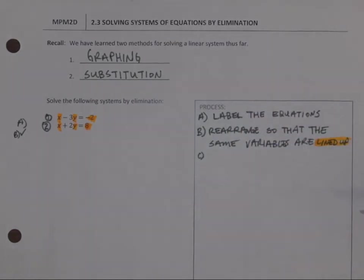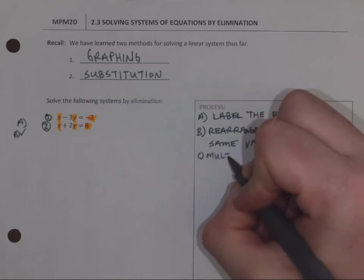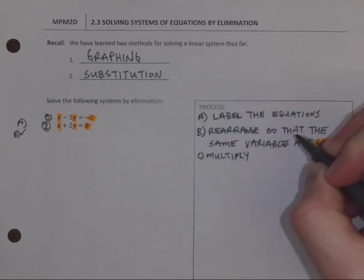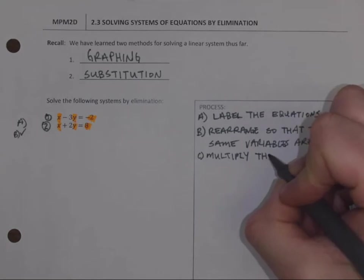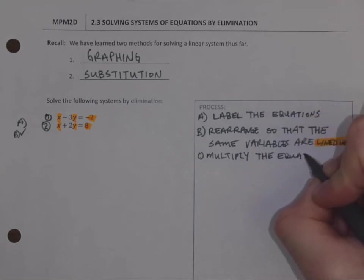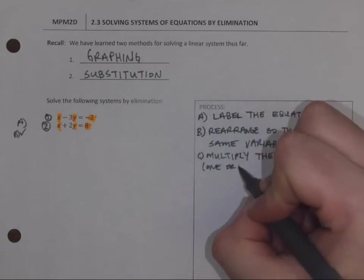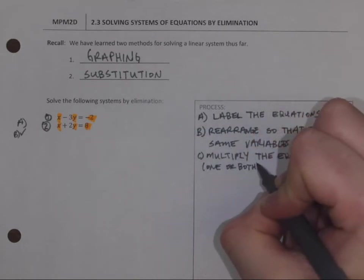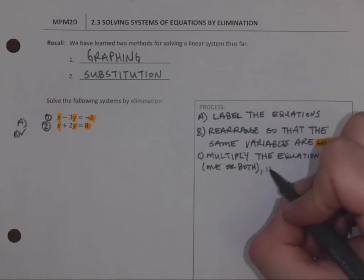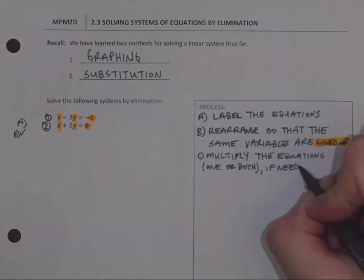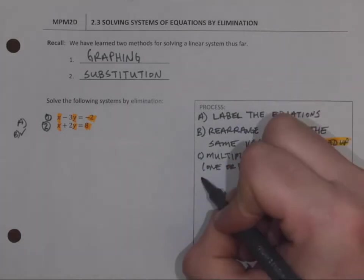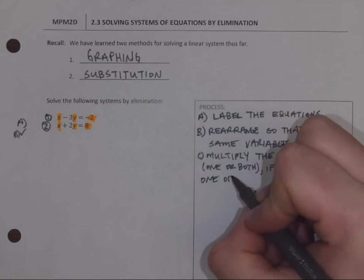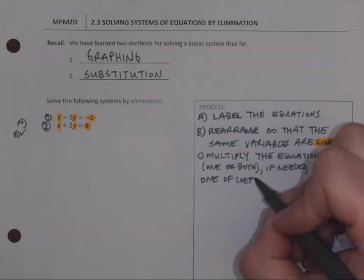Now, where we would have rearranged, because they're lined up, we need to multiply the equations. And that can be one or both, if it's needed, so that one of the coefficients are the same.